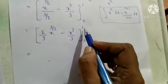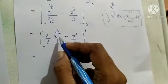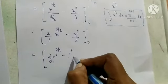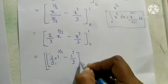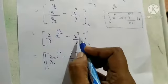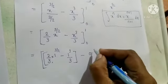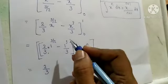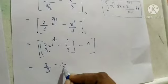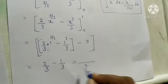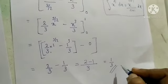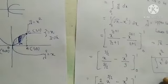Applying the upper limit first, replacing x by 1: we get 2 by 3 into 1 raised to 3 by 2 minus 1 cube by 3. For the lower limit x equals 0, the whole term becomes 0. This equals 2 by 3 minus 1 by 3. The denominator is the same, so subtracting the numerators gives 1 by 3. So 1 by 3 square units is the area of this shaded region. I hope you understood this question.